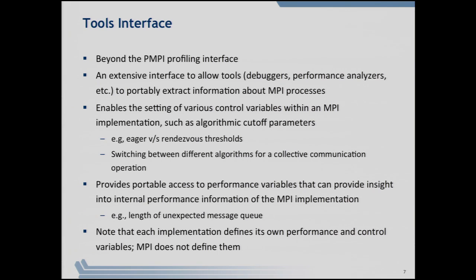There is a new tools interface called MPI_T, which goes well beyond the original PMPI profiling interface. PMPI was simply a way to trap MPI functions for instrumentation, but there was no way for a tool to query internal features of an MPI implementation — for example, the length of the message queue. In some codes, processes can be bombarded with messages; receive queues can grow to 10,000 pending messages. MPI_T provides features by which a tool can ask for implementation-specific details not otherwise accessible.